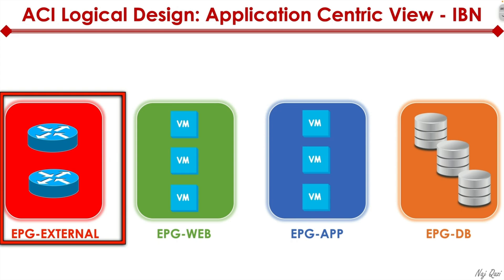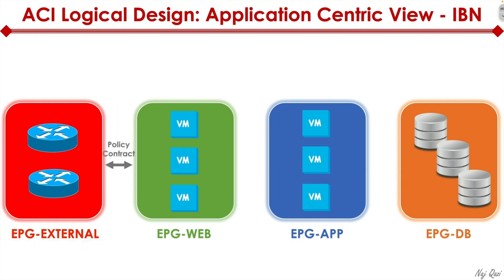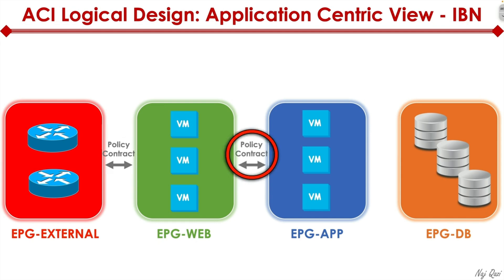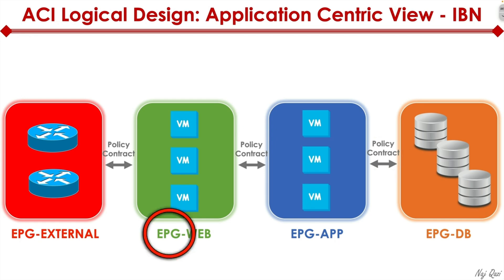There's also an external tier — a set of routers at the edge of the network that allow outside users over the internet to connect to the web server. In ACI, we have what's called a policy contract, which dictates how traffic flow is controlled. The policy contract only allows legitimate traffic and can block hacking attempts. For example, external users cannot connect directly to the app tier or database tier — the external tier can only talk to the web tier. Similarly, a contract specifies that the web tier can only talk to the app tier, and the app tier can only talk to the database tier.